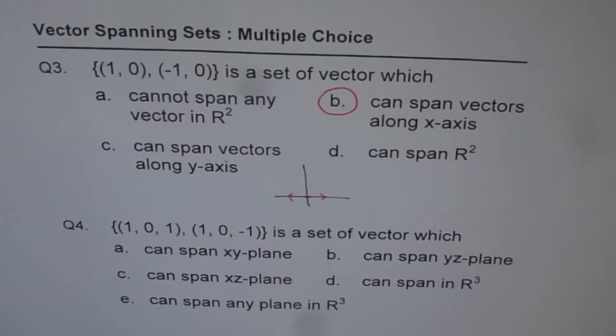Question number four: so here we have vectors in R³: (1, 0, 1) and (1, 0, -1). This is a set of vectors which: a) can span xy-plane, b) can span yz-plane, c) can span xz-plane, d) can span in R³, e) can span any plane in R³.